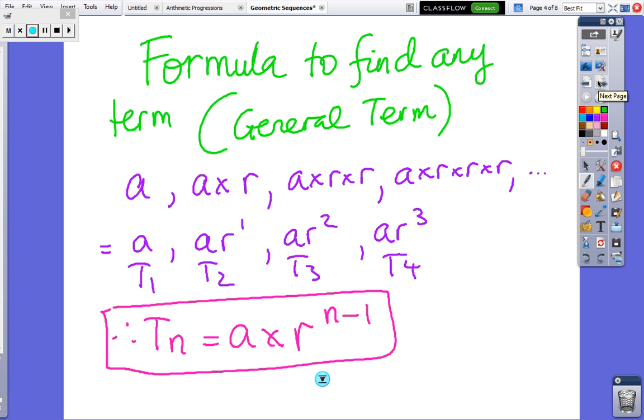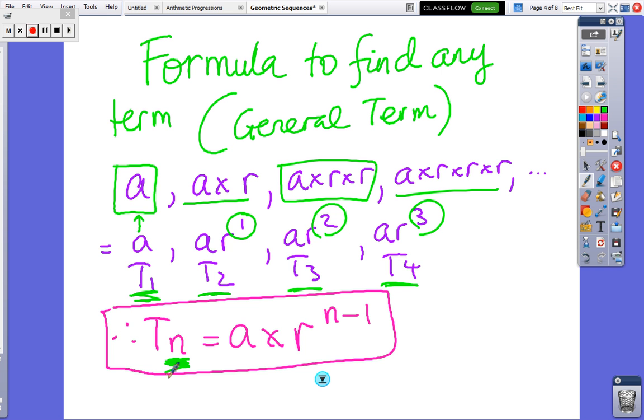So we need to find a formula so we can find any term in the sequence, so we don't have to just laboriously double, double, double, or triple, or whatever. We start off with A, and then we multiply by R, then we multiply by another R, then we multiply by another R. The first term just has A, the second term has one R, the third term has two R's, the fourth term has three R's. So when you have any number term, it always has A, R, and then it's one less power than the number of the term. That's the formula that we're going to use.